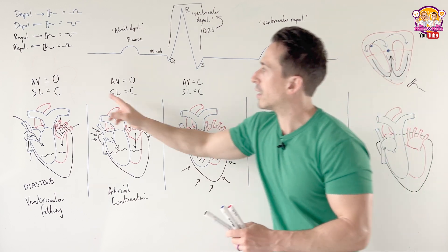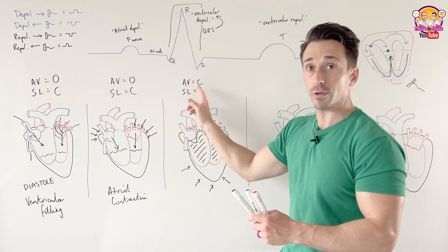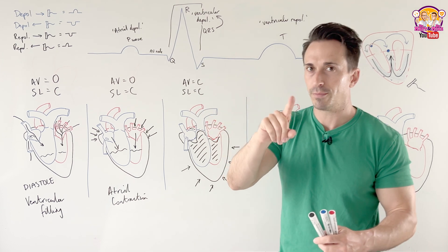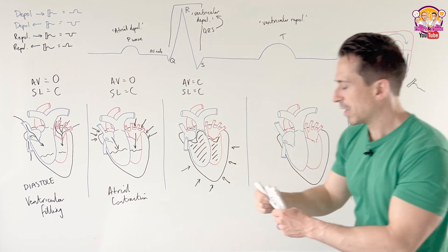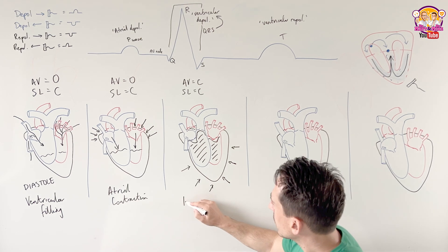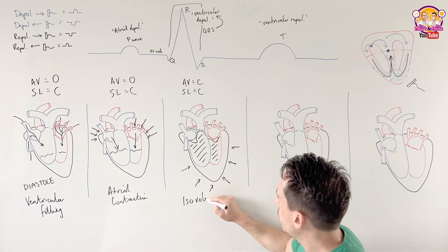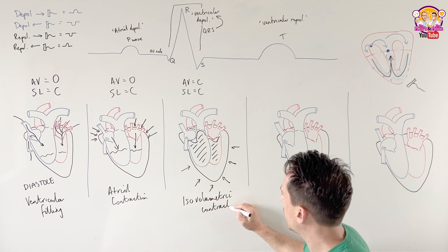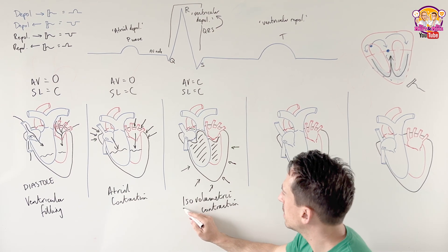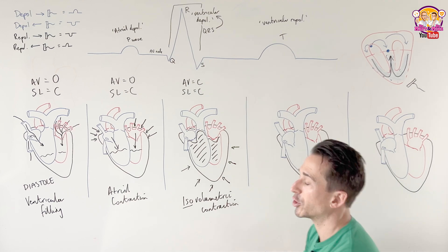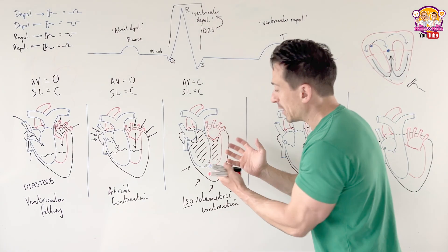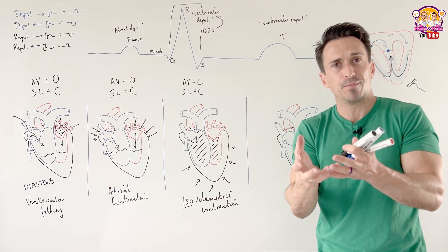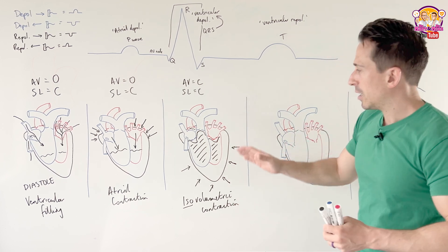We call this isovolumetric contraction — iso means same, so same volume at contraction. The ventricles are basically filled with blood just before ejection, but nothing has ejected yet. Both AV valves and semilunar valves are closed — we've just shut the door.